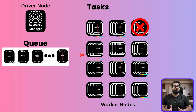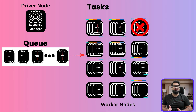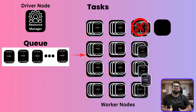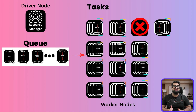What happens if a worker node crashes mid-job? Spark doesn't restart the whole job. Because of the DAG, Spark has a complete record of data lineage — it knows exactly how every piece of data was created. It simply looks at what tasks were lost and reassigns them to a healthy executor to be recomputed. The recovery is fast and targeted.